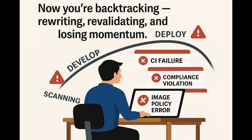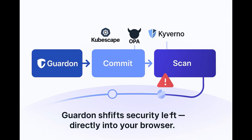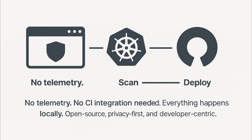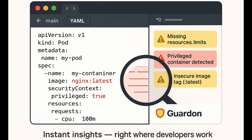And that's exactly where Gardon comes in. Gardon brings those same security compliance checks to the earliest point in your workflow, right into your browser. It's an open-source Chrome extension that automatically scans Kubernetes YAML files as you view or review them on GitHub or GitLab. You don't need to deploy anything, integrate with your CI, or send data anywhere. Just open a YAML file and Gardon instantly highlights misconfigurations, explains why they matter, and even suggests fixes. It's about shifting security left — not as a slogan, but as a concrete action developers can take every day.